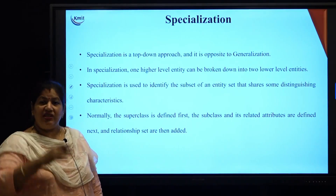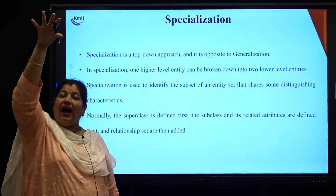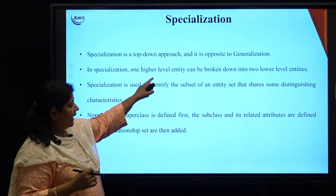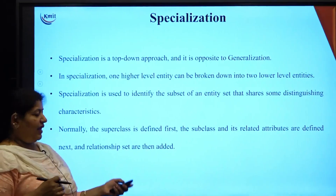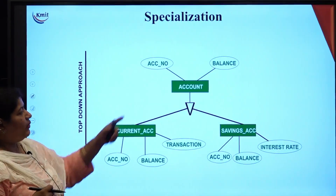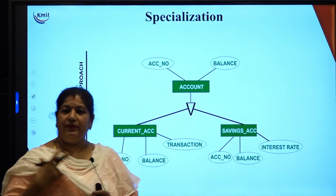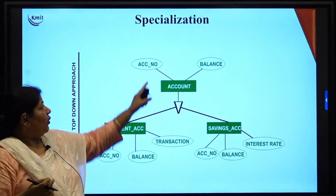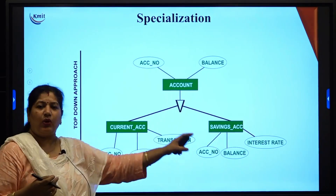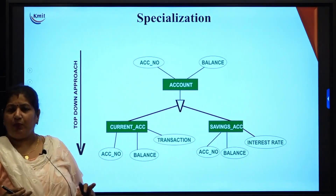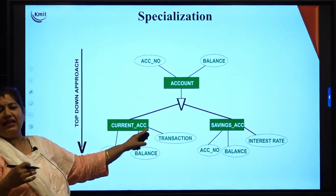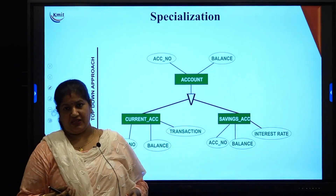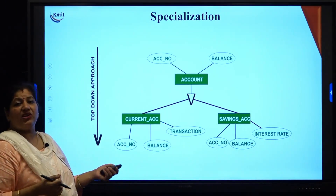Next is specialization, which is a top-down approach. A higher-level entity is divided into subtypes — this is the superclass and subclass concept. For example, an account in a bank can be of two types: current account or savings account. Account has attributes like account number and balance, shared by both subtypes. In addition, a current account may have transaction details, and a savings account may have the rate of interest. This is the specialization concept.